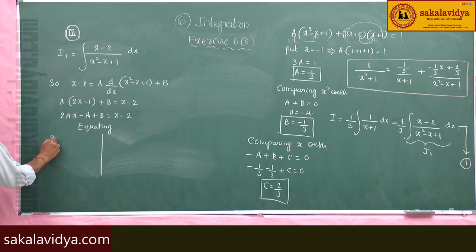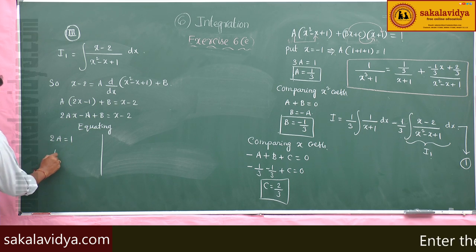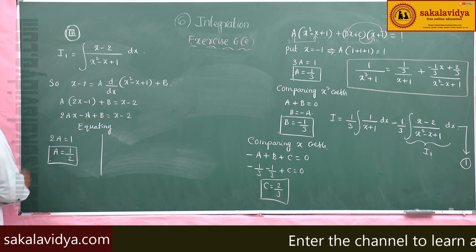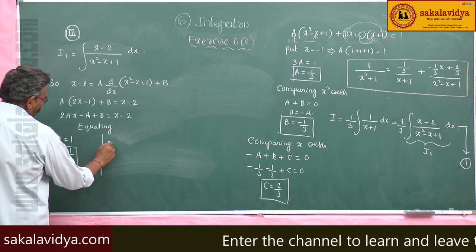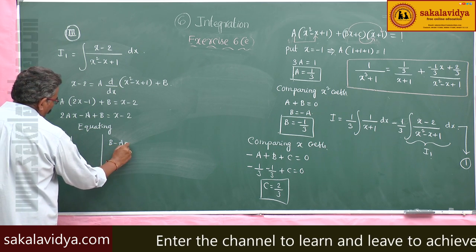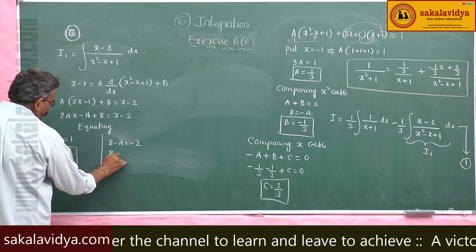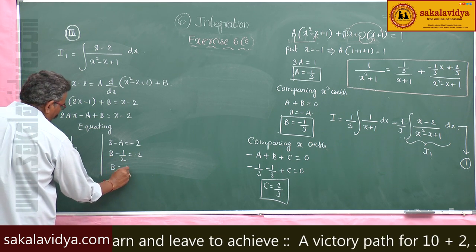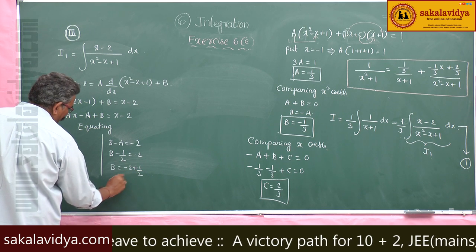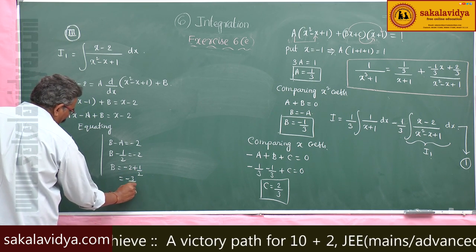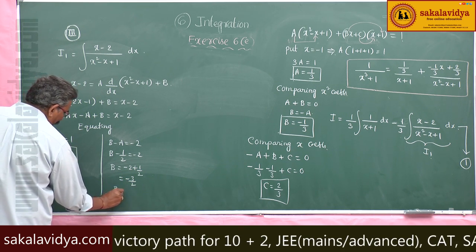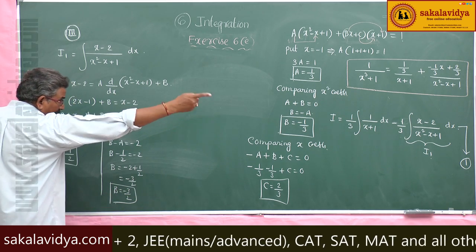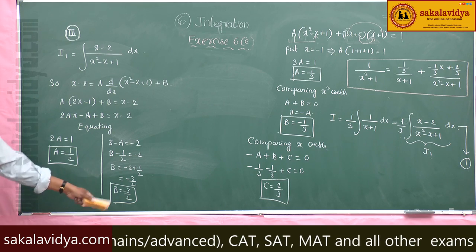Equating coefficients: 2A equals 1, so A equals 1 by 2. Then B minus A equals minus 2, so B minus 1 by 2 equals minus 2, giving B equals minus 3 by 2. Note these A and B are different from the earlier partial fraction constants.